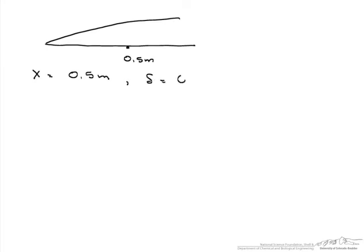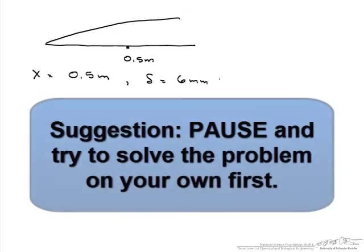So what we have here is a flat plate and on that flat plate we have water that flows by it. The flat plate is oriented to the flow and a boundary layer is created. We want to know at a distance of 0.5 meters down the plate, where the boundary layer thickness is 6 millimeters, is the flow laminar or turbulent?